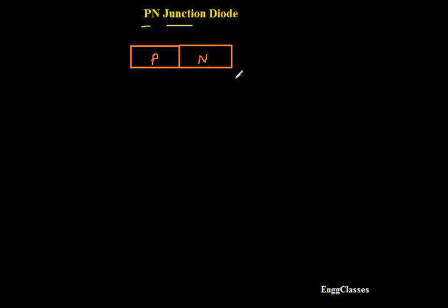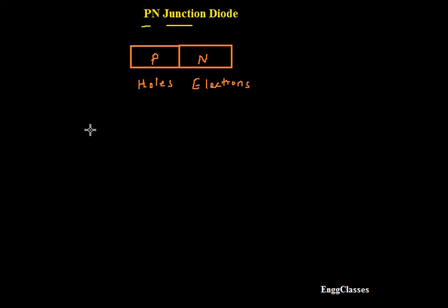Now I consider P-type and N-type semiconductors. P-type semiconductors are rich of holes, and N-type semiconductors are rich of electrons. To understand the operation behind P-type and N-type semiconductors — what happens once I join these two things chemically?